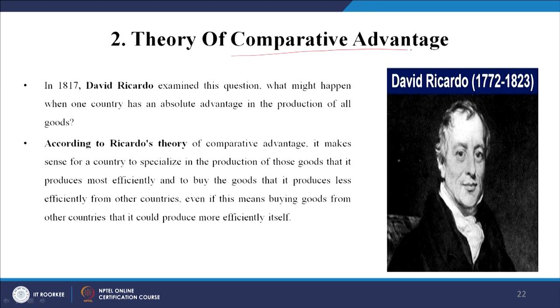The next free trade theory was given by David Ricardo — comparative advantage. Ricardo asked: what will happen when one country has an absolute advantage in the production of all goods? If one country is good at both rice and cocoa, should there be international trade? People think: if I am good at both, why should I trade with the other? That is a very poor thought. Ricardo explained why trade is still beneficial in this case.